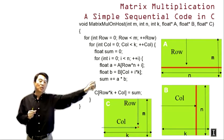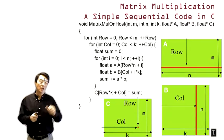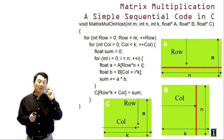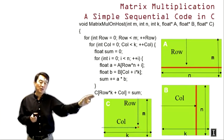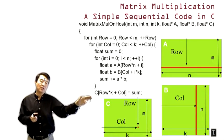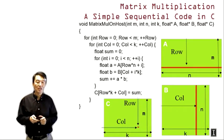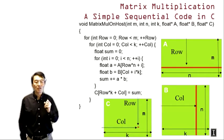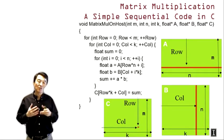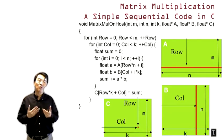We multiply the accessed elements of A and B and accumulate the result into sum. Once the for loop finishes, we have the total value for the C element and write it to the appropriate C location. The linearized address is computed as row×K plus col. This is the complete sequential C code for matrix multiplication. Note that this is a basic form — since matrix multiplication is a very important computation, there are many optimized sequential approaches, which we will return to later.